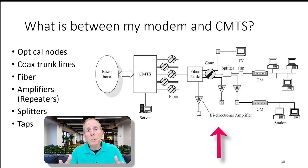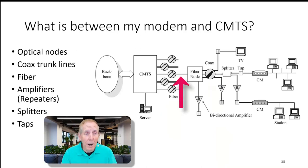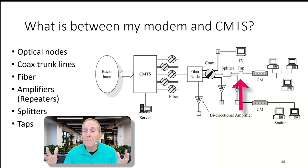So exactly what is between my modem and CMTS? Well, a lot of stuff. There are optical nodes, coax trunk lines, fiber optics, amplifiers and repeaters - basically amplifiers and repeaters are synonymous. Then they have splitters, then they have taps, and then obviously your cable modem. There's lots of equipment between the CMTS and your cable modem, which is why you can have lots of problems with data to your home.